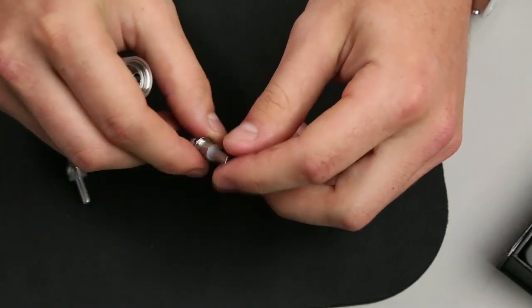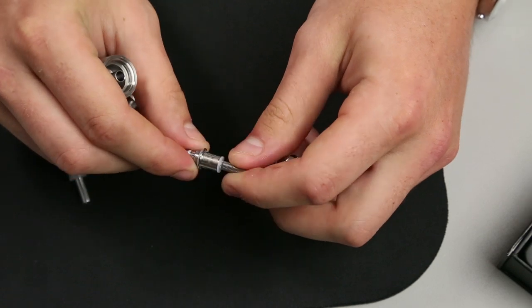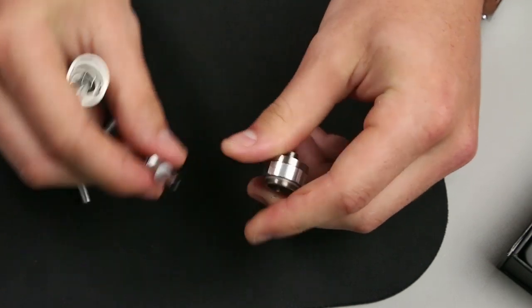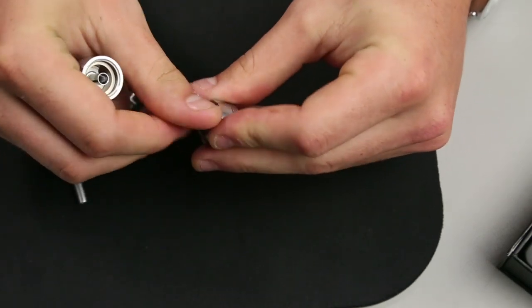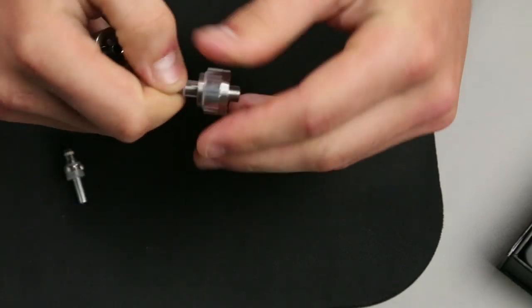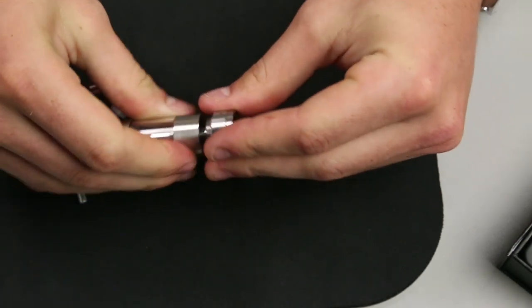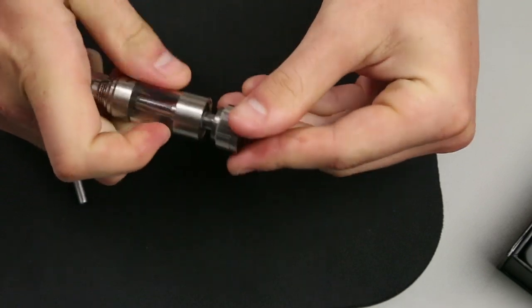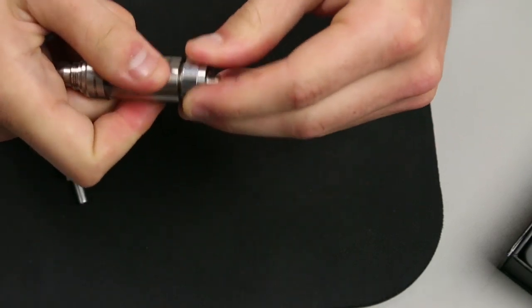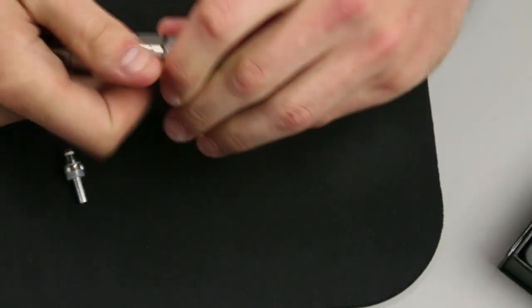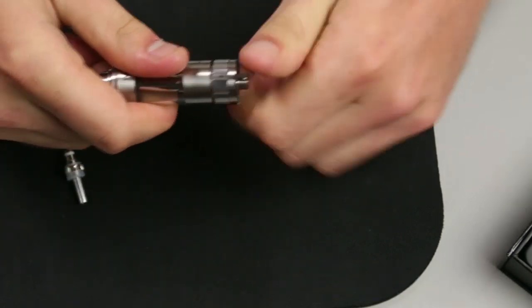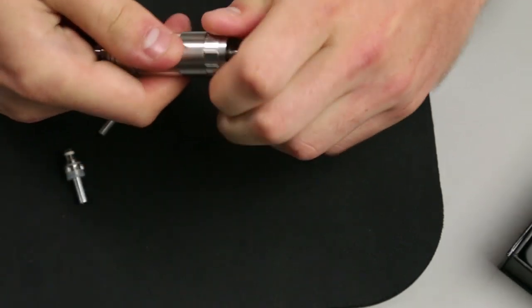This is your Kanger V2 dual coil. So these are the newest Kangers that are out in the market. This is what everybody has these days. So that'll fit right in there. Sometimes pushing that in can be a little tough. That screws right in, you're good to go.